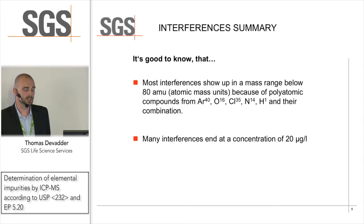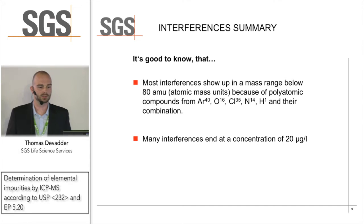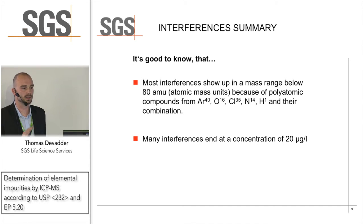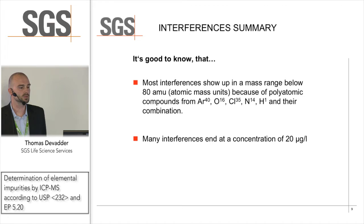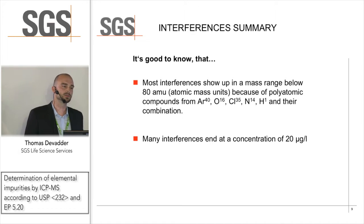Just a quick summary: it's good to know that we have the worst interference at mass 80 — that is selenium — due to compounds of argon species. Many interferences reach an end at a concentration of 20 micrograms per liter.